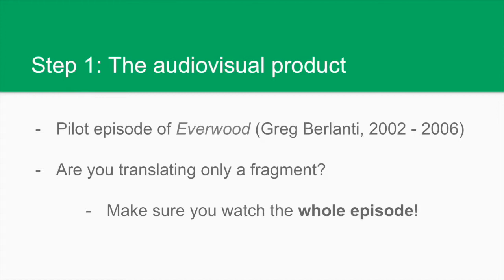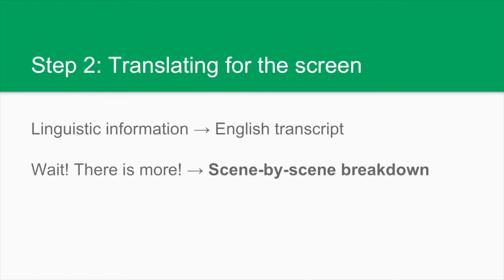First things first. We have selected a 5-minute excerpt from the very first episode of Everwood, which was created by Greg Berlanti. Although our fragment is relatively short and the full episode lasts for about three quarters of an hour, watching it in full will help us avoid many unfortunate mistakes and also prevent translation problems in the future. We may obtain important linguistic information from the script, or rather our own personal transcript if we attest any major dissimilarities. But paying careful attention to each scene will provide us with invaluable material, both verbal and non-verbal, thus enriching the annotations that we may make.